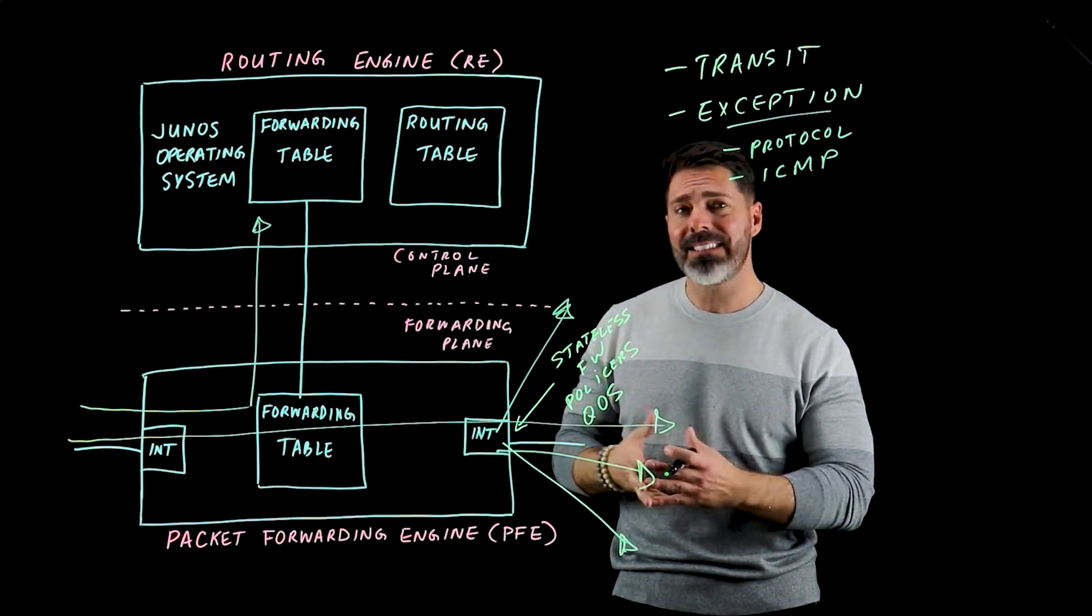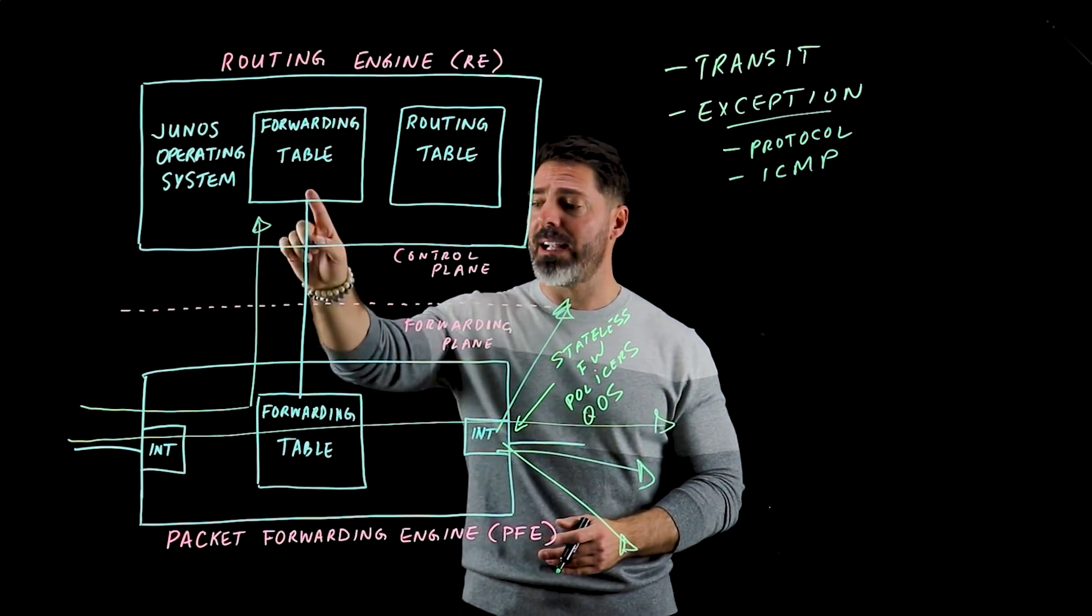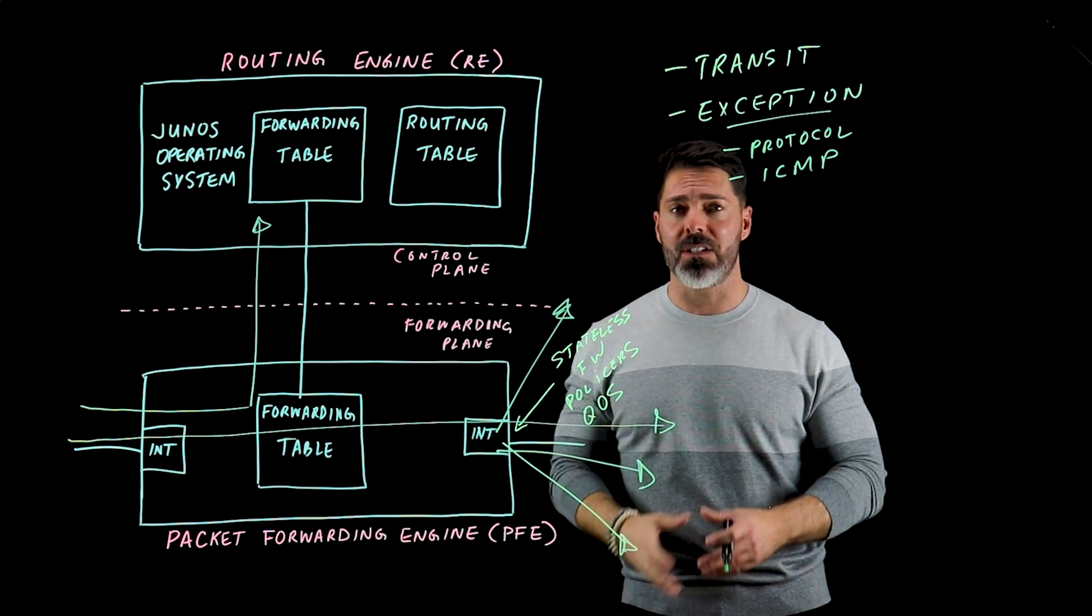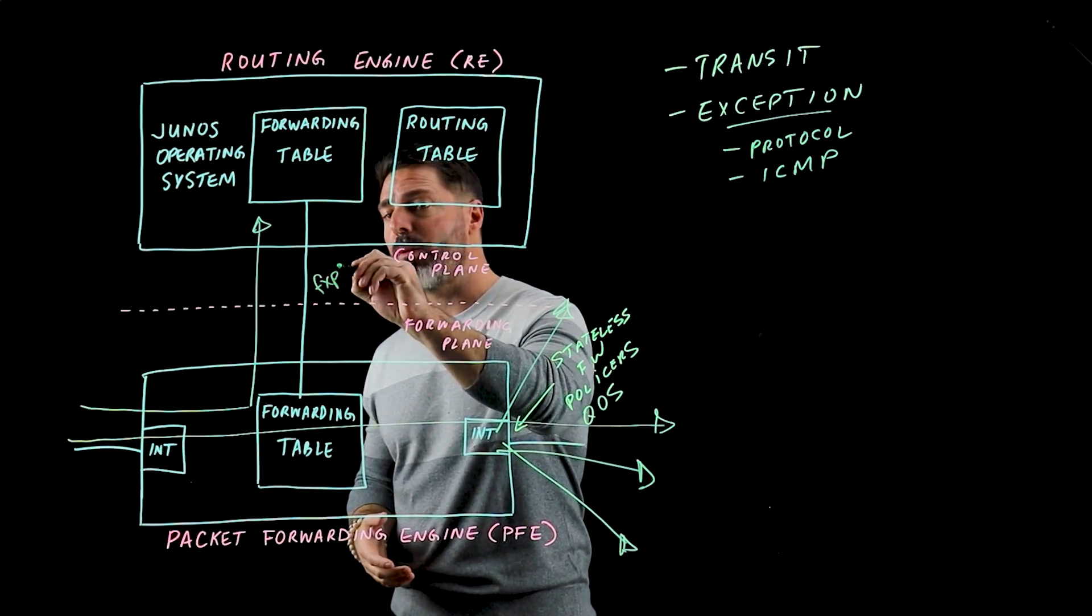The last thing we should cover is that this link right here that connects the forwarding table between the routing engine and the packet forwarding engine is very important. In most platforms, this link is called FXP1.